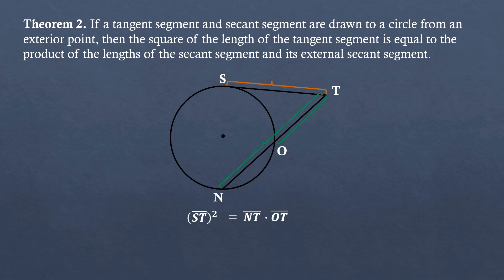We will form the equation based on theorem number two. Let us give a value to each segment to show the relationship. Substituting their given values: for tangent segment ST, six squared is equal to the secant segment NT which equals nine, multiplied by the external secant segment OT with the value of four. Six squared is 36, and nine times four is also 36.